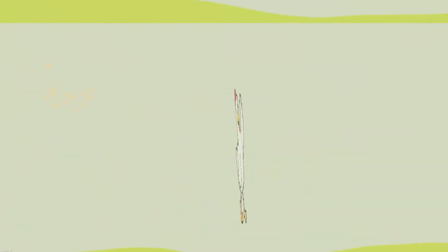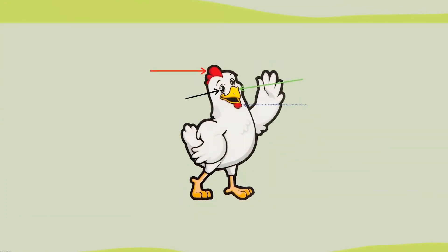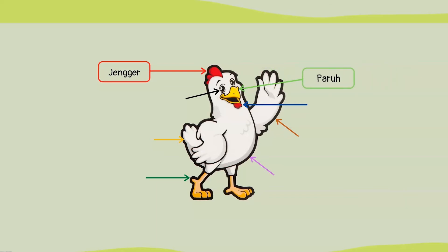Sekarang simak gambar di bawah ini, kira-kira apa saja yang ada pada bagian tubuh ayam itu. Yang pertama ada jengger, di mana jengger ini memiliki fungsi untuk membedakan mana ayam jantan dan ayam betina — ayam yang memiliki jengger adalah ayam jantan. Yang kedua ada paruh, yang berfungsi untuk mengambil makanan dengan cara mematuk.